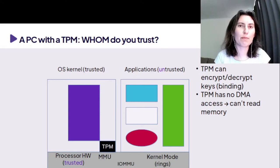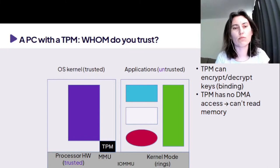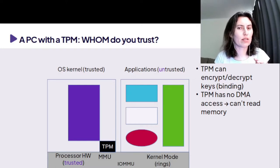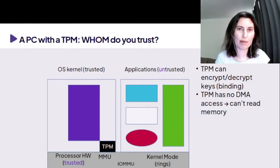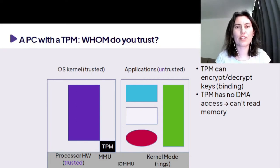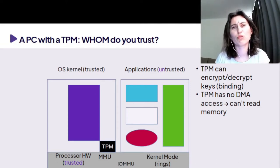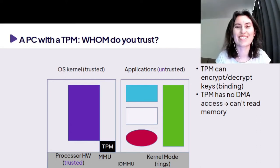In a system with a TPM, we are mostly in the situation of the general purpose system we have seen before, and we add one more block: the TPM. The TPM can encrypt and protect keys, but it's quite limited because it doesn't have DMA access — it cannot access memory on its own, it cannot read the memory to re-verify it. It depends on the operating system and the drivers to feed it with data.